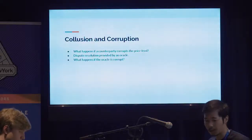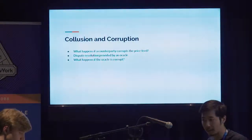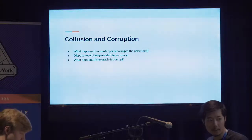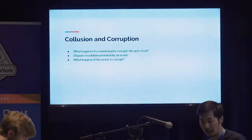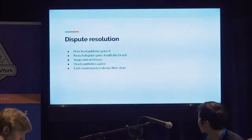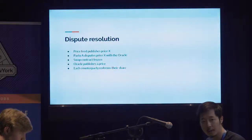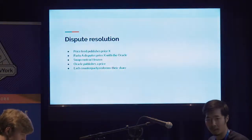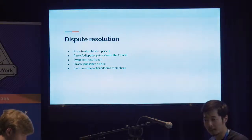There is also a possibility that the price feed is controlled by a third party and gets corrupted. So there is a dispute resolution protocol within our smart contract. If one counterparty disagrees with a price published by the price feed, they can dispute it and go to an Oracle, which will resolve the price. When there's a dispute, the contract is frozen, the Oracle comes in and resolves the correct price, and the counterparties redeem what they're owed — similar to as if the contract went through expiry.